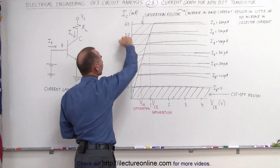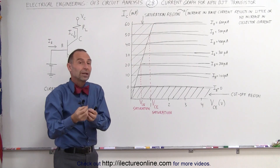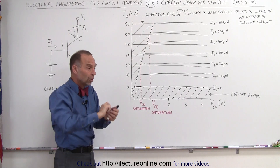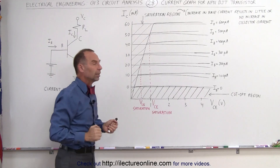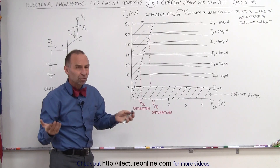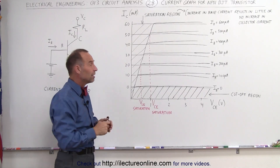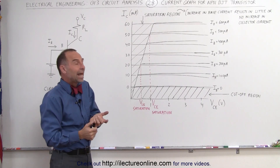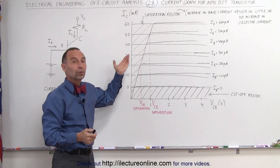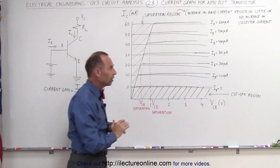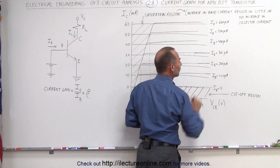On the vertical axis we have the current from the collector, and ultimately that's what we're trying to do with a transistor — increase the base current to get an increased current on the collector. In this particular case, we have a gain of about 100, which means for every milliamp of current we get to the base, we should have 100 milliamps of current to the collector, although we start off with intervals of 100 microamps on the base current.